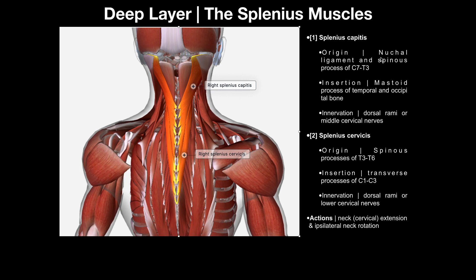Specifically, it's going to originate on what's called the nuchal ligament, also called ligamentum nuchae, and the spinous processes of C7 to T3. What does 'nuchal ligament' mean? To understand this, let's take a look at this slide right here.